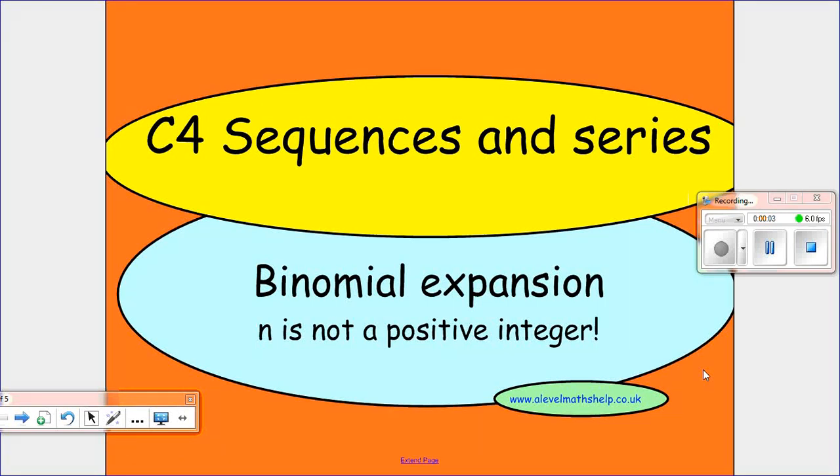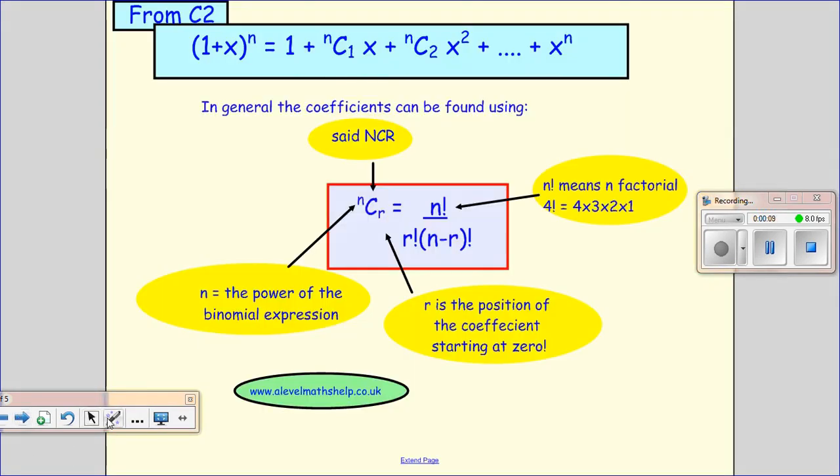Hi, so in this video we're going to be looking at the binomial expansion, and this time we're looking in the case when n is not a positive integer. Now in C2 we use this formula here.